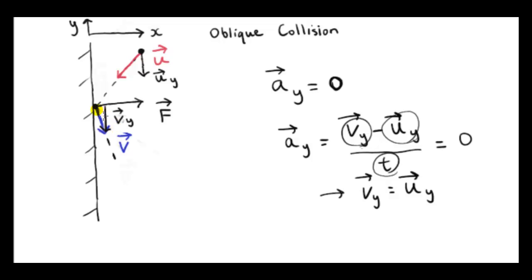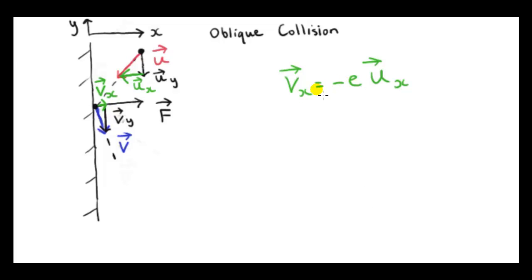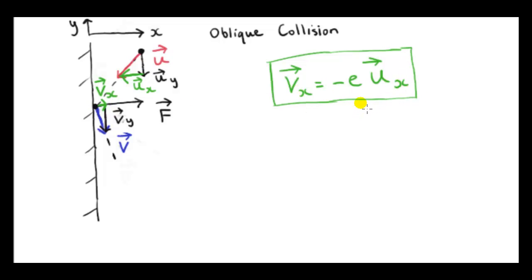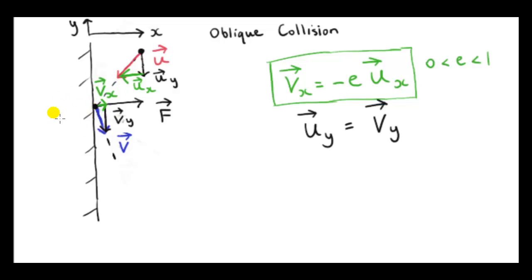Now let's consider the horizontal component — a very different situation, because there's a force on the particle in the x direction, changing the x component of velocity. Using the same relation as for the head-on collision but now for x-components: v_x equals minus e times u_x. Since e is between 0 and 1, v_x is smaller in magnitude than u_x because some energy of the collision goes into the wall.